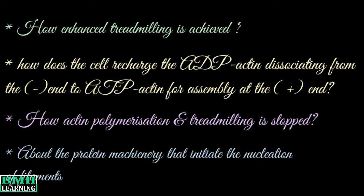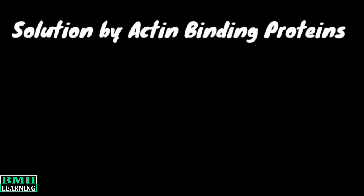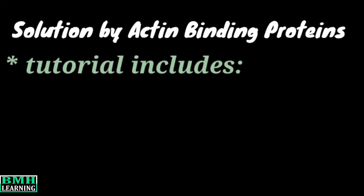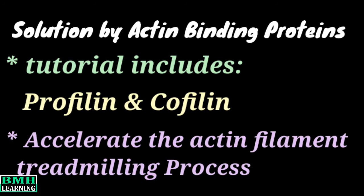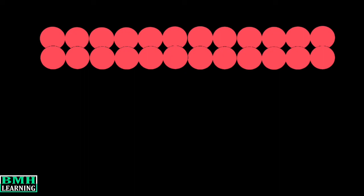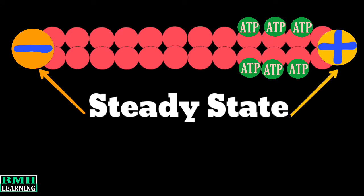In addition, we must also know about the protein machinery that initiates the nucleation of filaments. This tutorial will only include profilin and cofilin. These proteins mainly function by accelerating the actin filament treadmilling process. Suppose this is the actin filament — from our previous knowledge we know it has two ends: the plus end and the minus end. At steady state there is addition of monomers at the plus side and loss of monomers at the minus side.